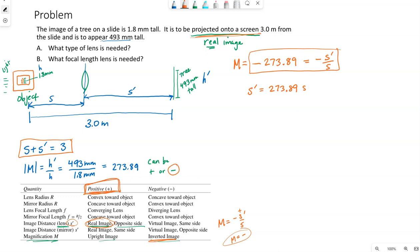And since, from the table below, we know we have a real image, so S prime needs to be positive. If I take this and plug it in over here, S plus 273.89 S is going to equal three meters. So S times 274.89 is equal to three. So S needs to be three over the 274.89.